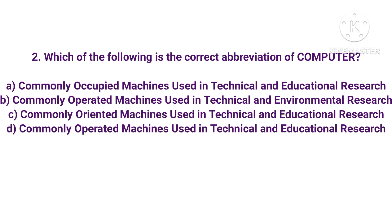Next: which of the following is the correct abbreviation of the word COMPUTER? The options relate to phrases like 'Commonly Occupied Machine Used in Technical and Educational Research' or 'Used in Technical and Environmental Research.' In competitive exams, options may look very similar, so choose carefully. The correct answer is option 4.